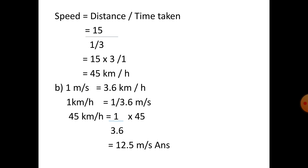Speed equals distance by time taken. Distance is 15 km and time is 1/3 hour, so speed equals 15 divided by 1/3, which is 15 into 3, equals 45 kilometer per hour. For part B, we know that 1 meter per second equals 3.6 kilometer per hour, so 1 kilometer per hour equals 1/3.6. Therefore, 45 km/h equals 1/3.6 into 45, which equals 12.5 meter per second.